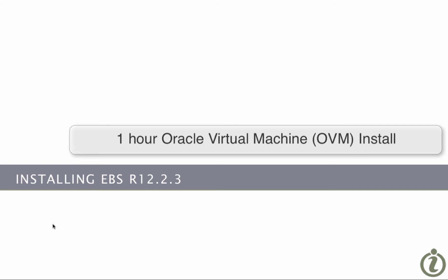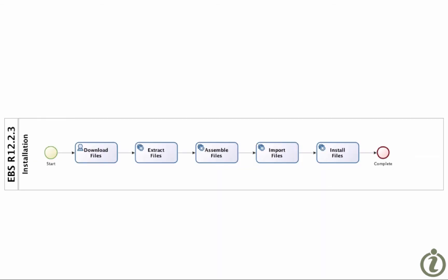We're going to install Oracle EBS R12.2.3 in about an hour. First we download the files, we extract the files, we assemble the files, input the files, and then we go on and do the installation. This is done from the Oracle e-delivery and we're installing the VM templates. We need some software before we actually start the installation.